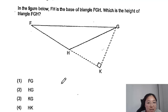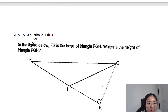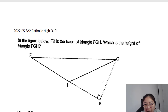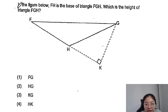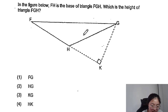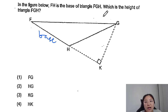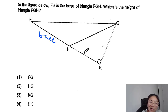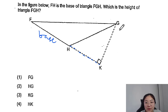Now the last example question — this is from Catholic High's P5 SA2 last year. The question states that FH is the base, so we fix FH as the base of triangle FGH. We need to find the height of triangle FGH. By extending the base, we can see that the answer will be KG.